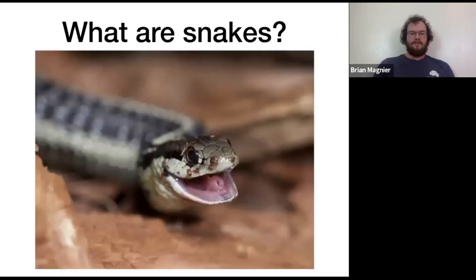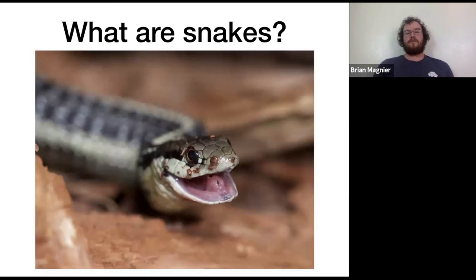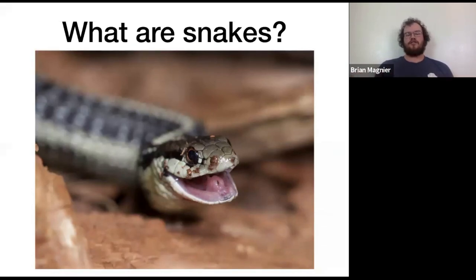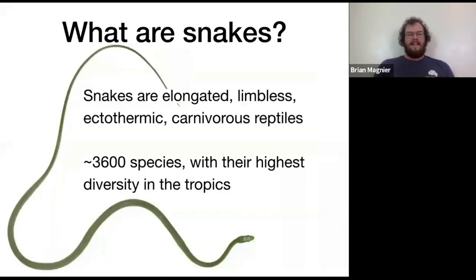What makes a snake a snake? The obvious one is a lack of legs, but there are plenty of critters without legs. What makes a snake different from a worm? Worms are invertebrates — no bones, no backbone, completely squishy — whereas snakes are vertebrates with bones. And are snakes slimy? No, they have dry scaly skin, so they're reptiles. Their skin doesn't allow gas exchange like a fish or amphibian would. So snakes are elongated, limbless, ectothermic, carnivorous reptiles.